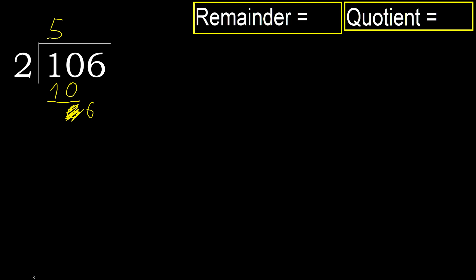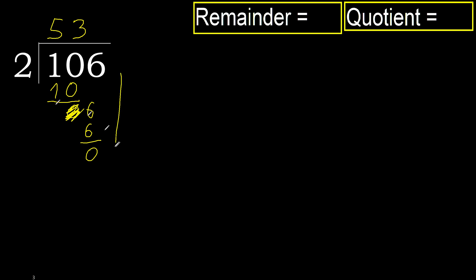2 multiplied by 4 is 8 — 8 is greater. 2 multiplied by 3 is 6 — 6 is not greater. Subtract, 0. Next, there is no number, therefore finish.